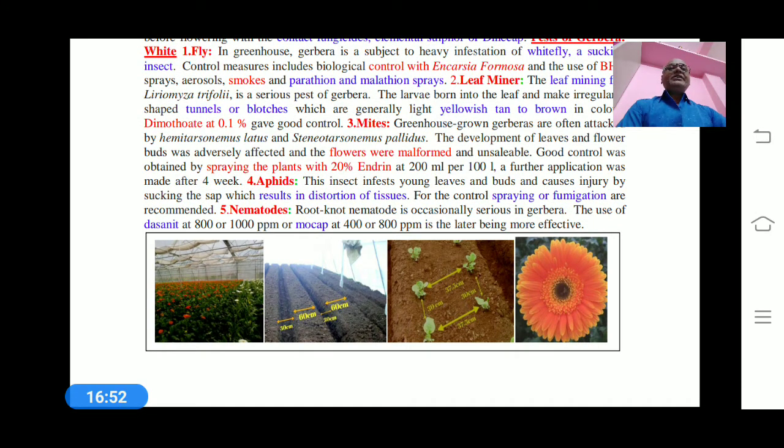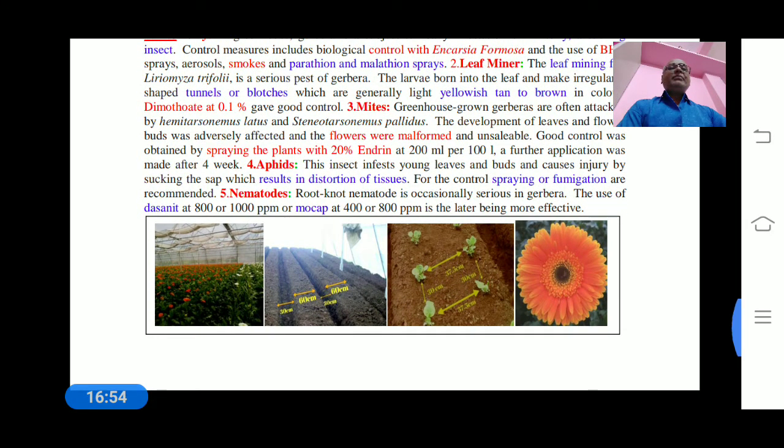It can be controlled by spraying the plants with 20% endrin at 200 ml per 1000 liters, with further applications after four weeks. Aphids infect young leaves mostly and cause injury by sucking sap, which results in separation of tissues. For control, spray or fumigate.